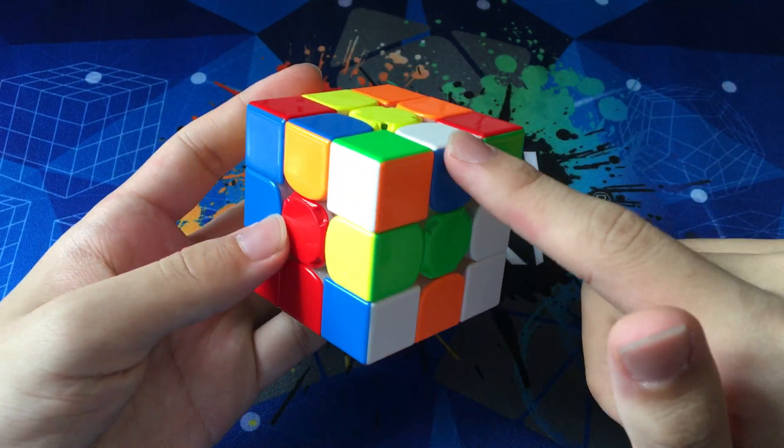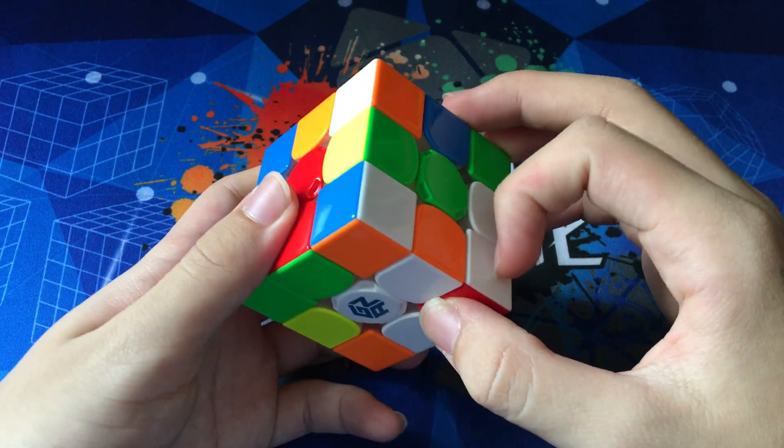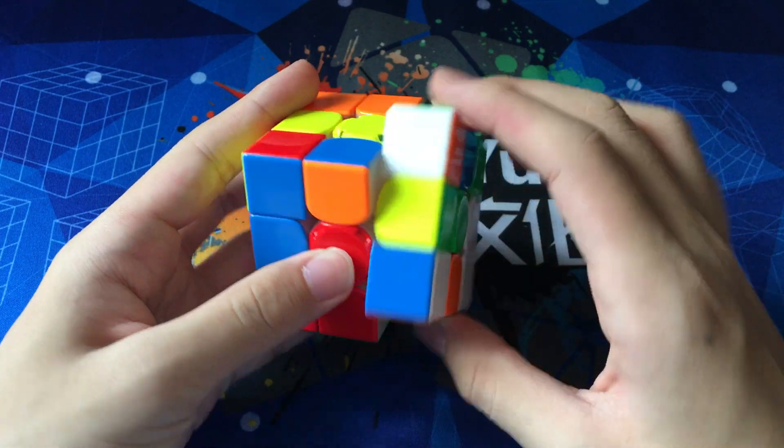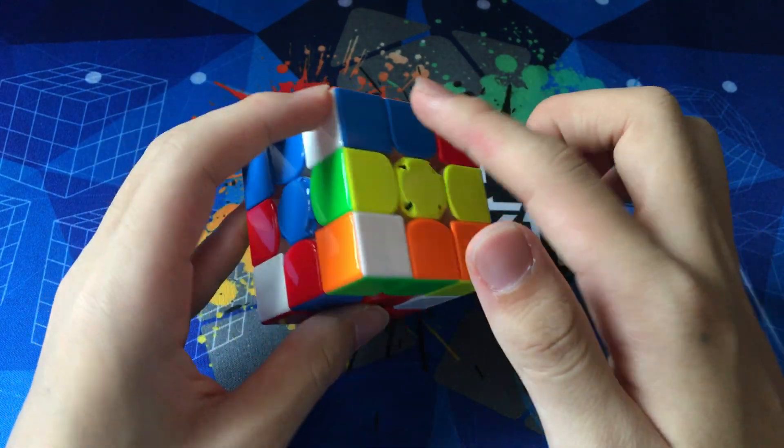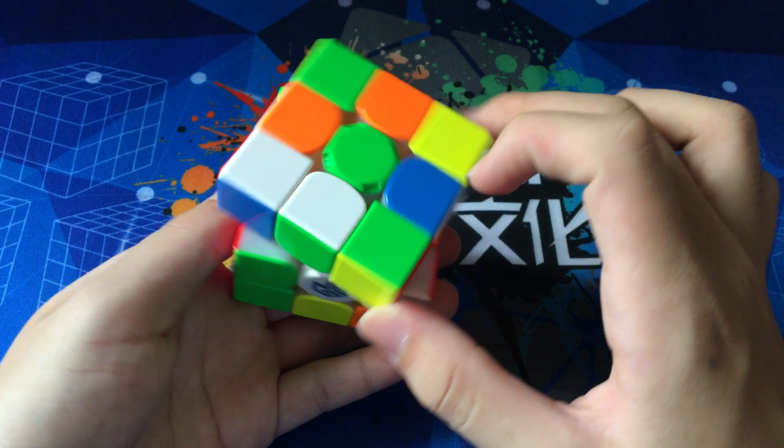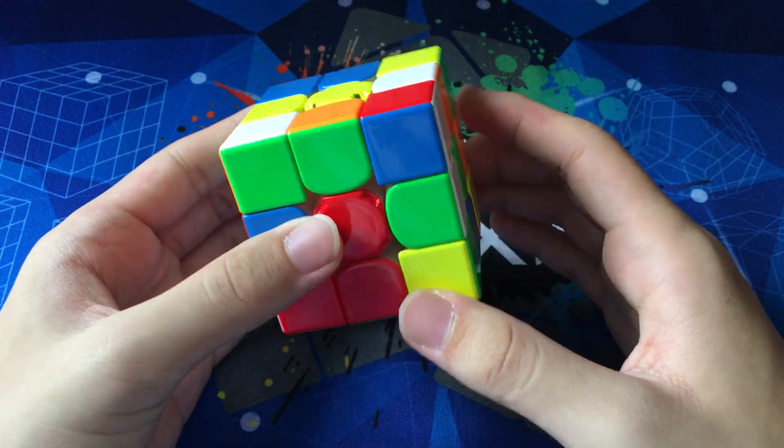So first, he's gonna insert this blue edge. But instead of just doing R2, he pairs up these two first, does a U2 to preserve it in the back, and then solves this blue edge.